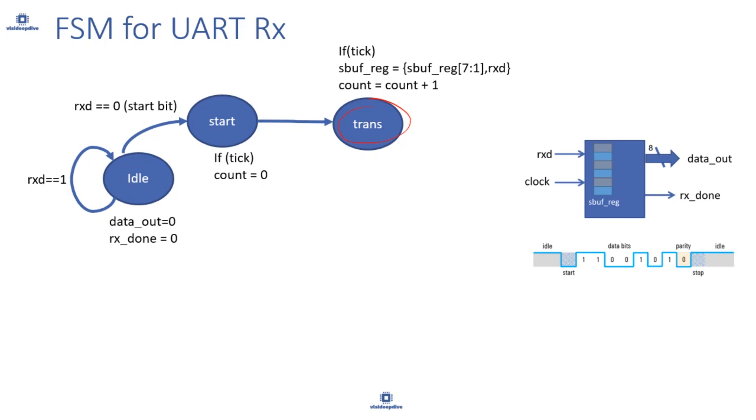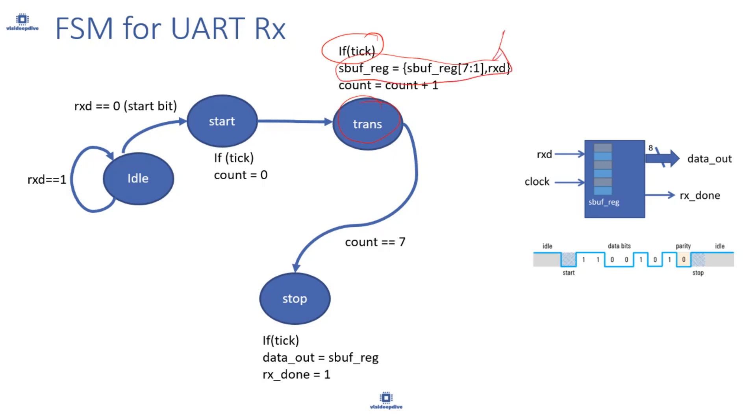It will basically start storing the data, each bit of data that you are getting in the sbuf register. You are getting data from the LSB, so each bit data that you are getting it will keep storing at the lowest bit one by one and increase count by 1. So it will keep counting and make sure all the 8-bit data is received. It will keep on counting till count is less than 7. We will keep receiving each bit of data on the tick because we have to receive at the baud rate, and then keep storing it in sbuf_reg at the lowest bit because LSB is transmitted. Once count reaches 7, then we will go to stop bit.